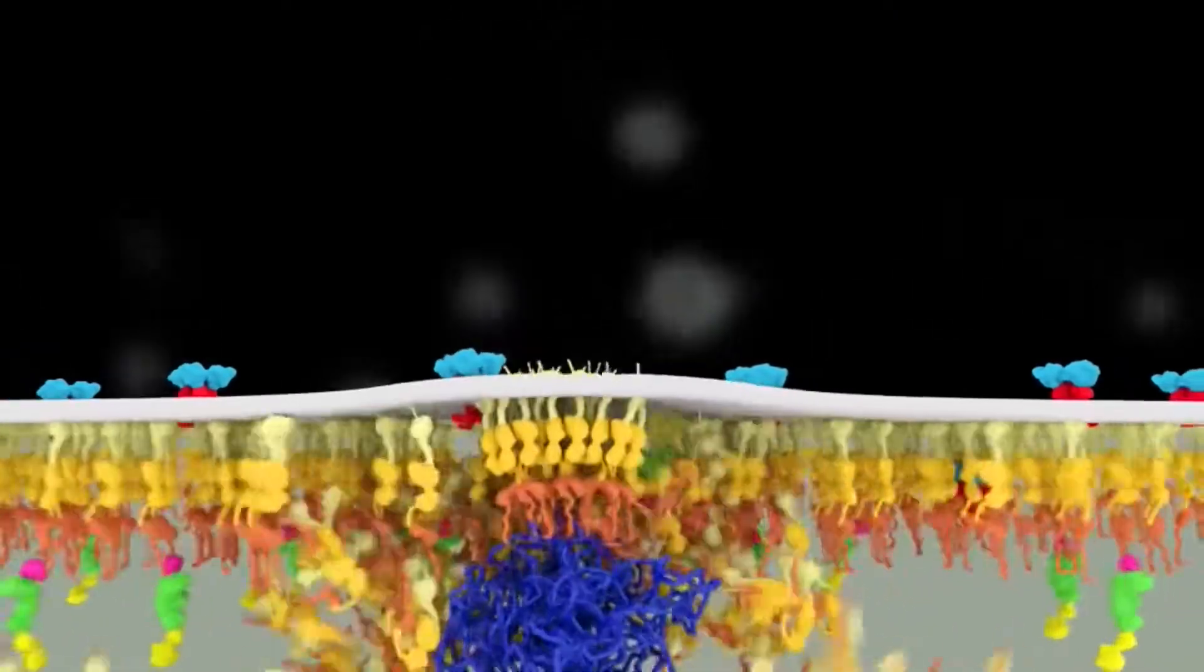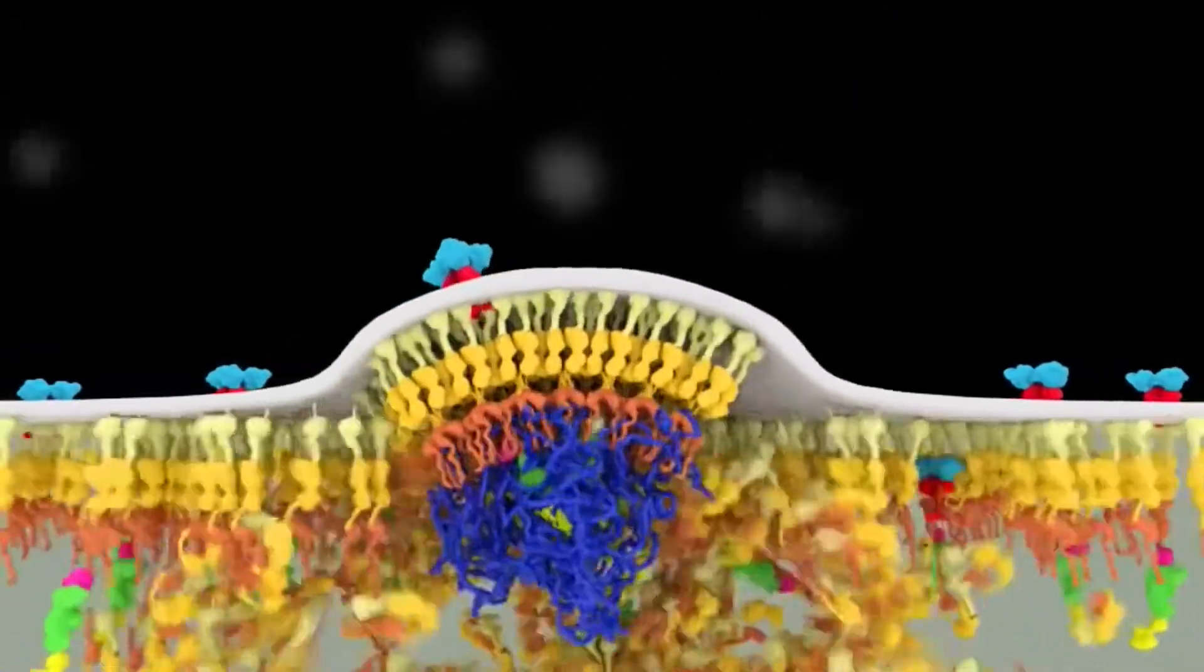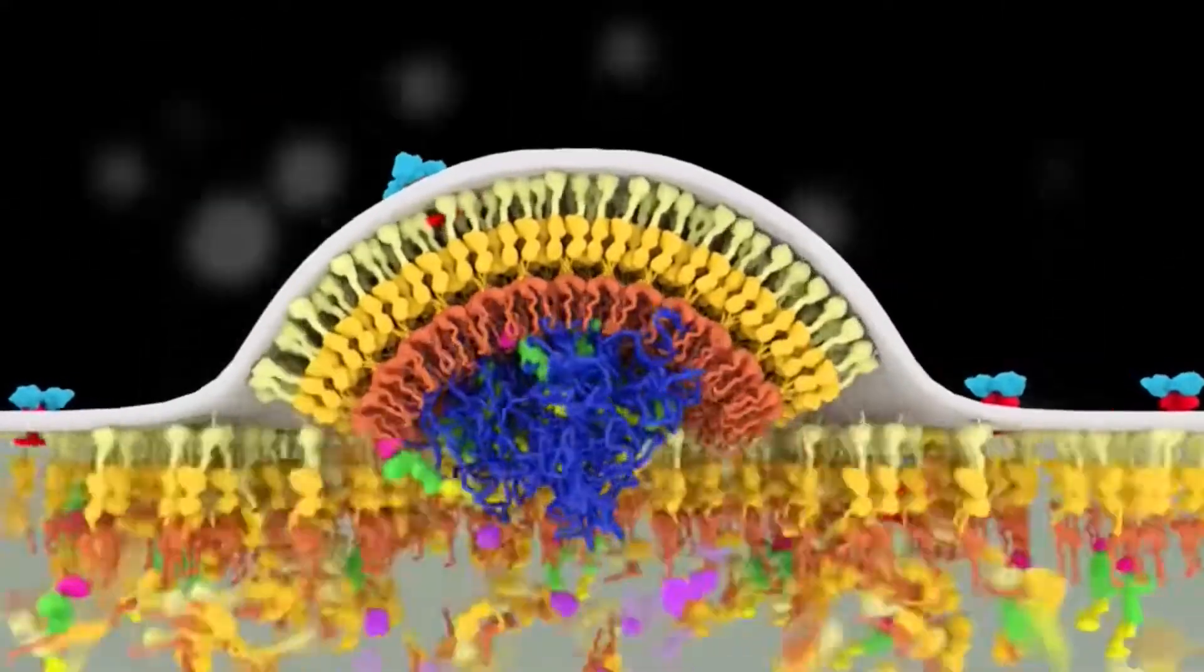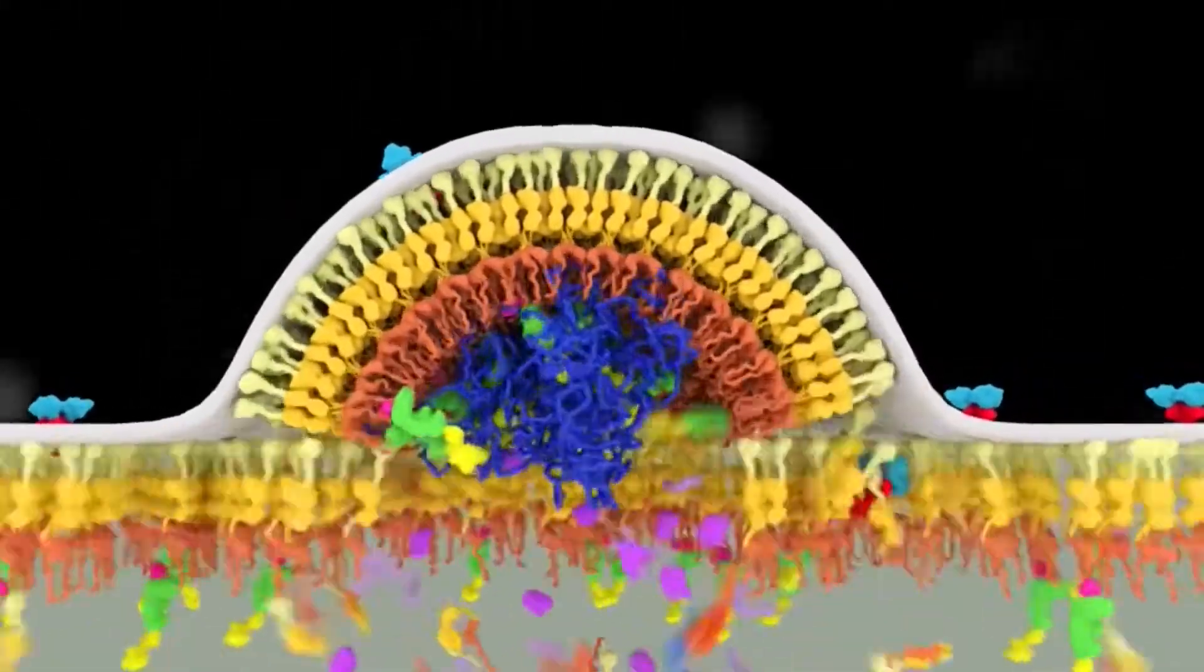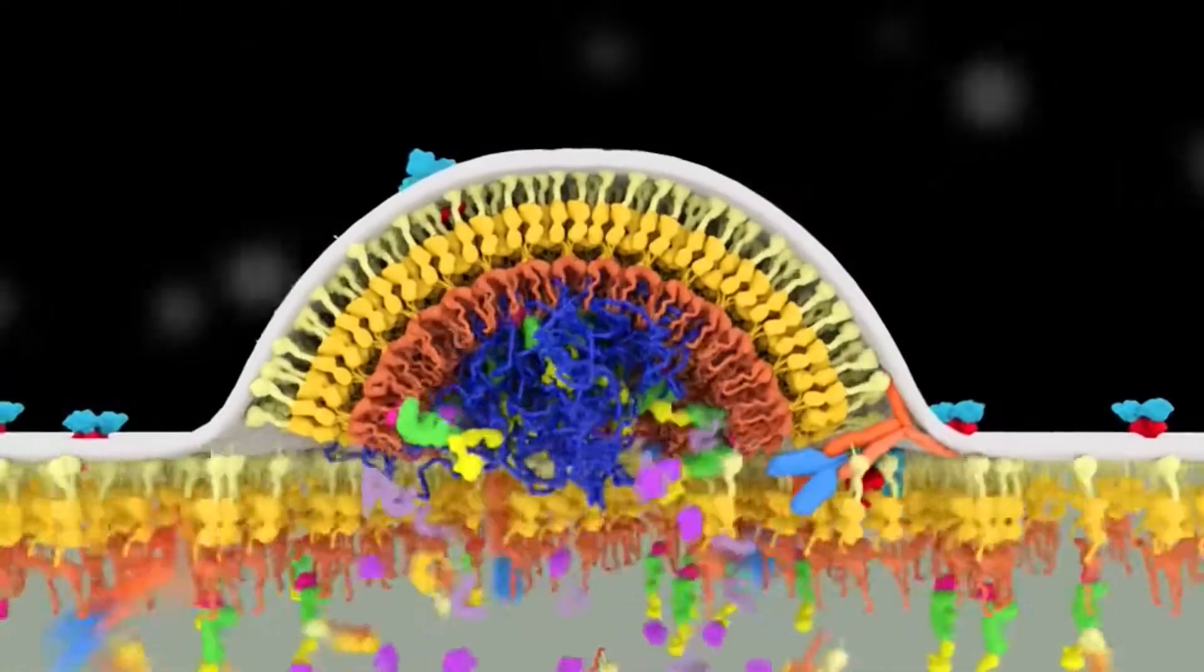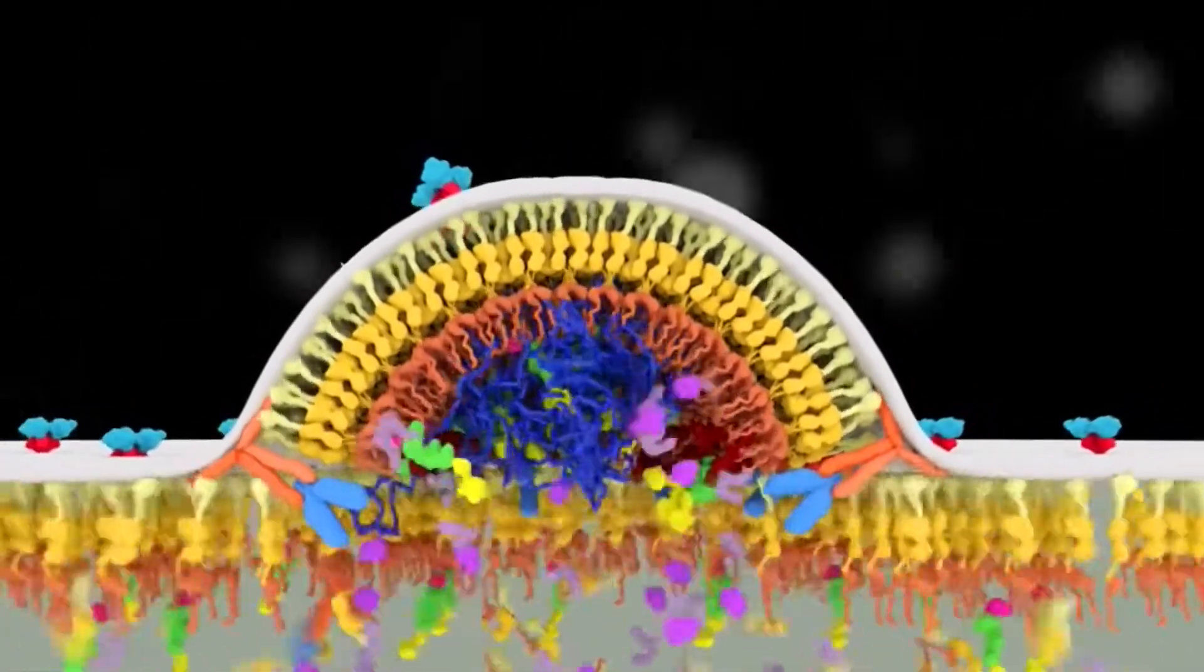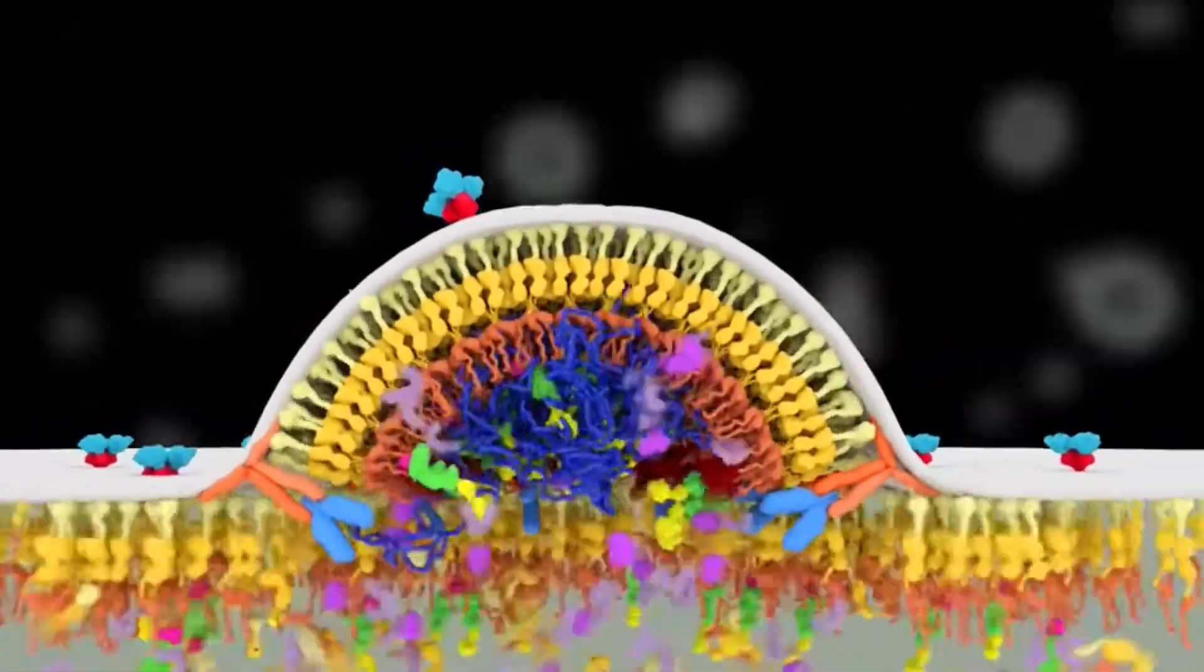At the cell membrane, viral proteins, including envelope protein and thousands of copies of GAG protein, accumulate and capture the dimerized viral genome. Meanwhile, GAG forms a tightly packed lattice that forces the membrane to bulge out.